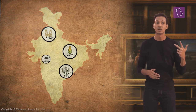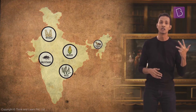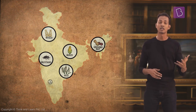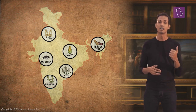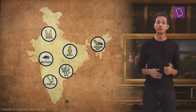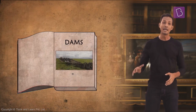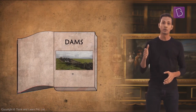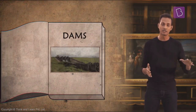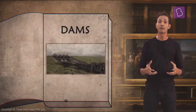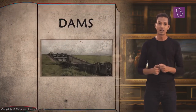India is an agricultural country. Rice, wheat, maize, mustard, groundnut and sugarcane are important food crops. Under the plan, many dams were built over major rivers for the development of agriculture.